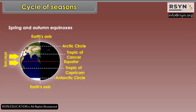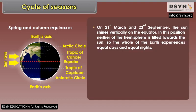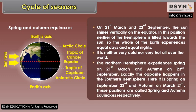Spring and Autumn Equinoxes. On 21st March and 23rd September, the sun shines vertically on the equator. In this position, neither hemisphere is tilted towards the sun, so the whole of the earth experiences equal days and equal nights. It is neither very cold nor very hot all over the world. The Northern Hemisphere experiences spring on 21st March and autumn on 23rd September. Exactly the opposite happens in the Southern Hemisphere — it is spring on 23rd September and autumn on 21st March. These positions are called spring and autumn equinoxes respectively.